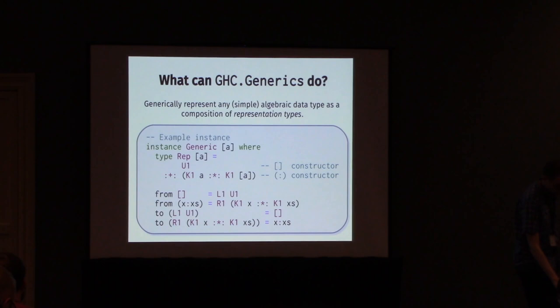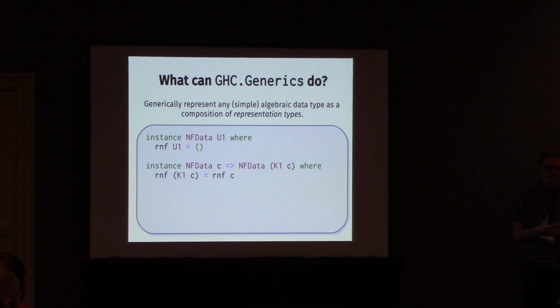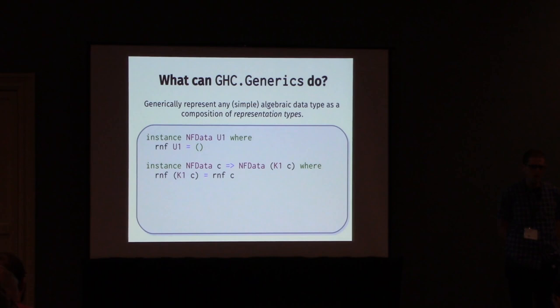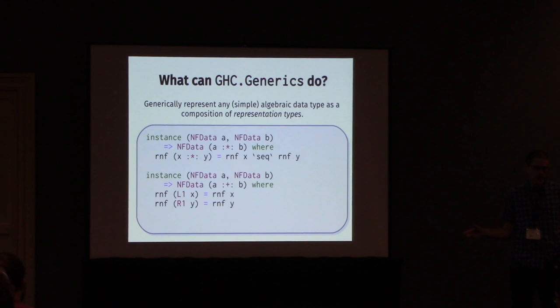Once we have the representation types in hand, writing datatype generic code is tantamount to writing code over the four representation types. So if we can do that, then we will have an NFData instance for anything we can possibly think of. If we have a constructor with no fields, then fully evaluating that is just a matter of pattern matching on the constructor. If we have a field, then fully evaluating that is tantamount to fully evaluating the underlying field. If we have multiple fields, evaluate the first field and then the second field. And if you have multiple constructors, then depending on the choice of which constructor you're given, evaluate the stuff underneath that constructor. That is NFData boiled down to its simplest idea.